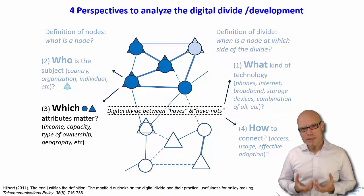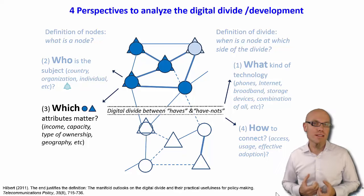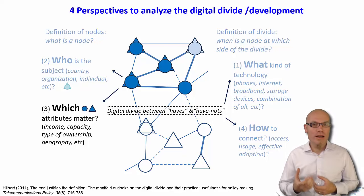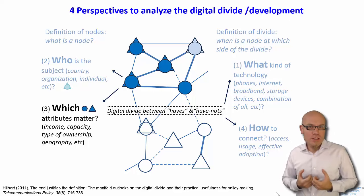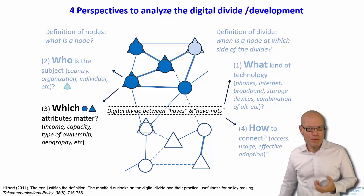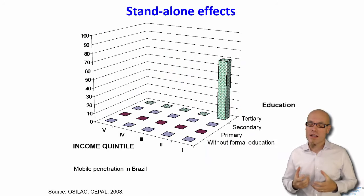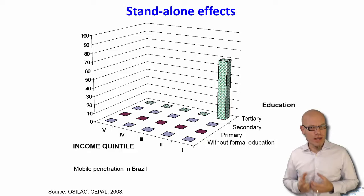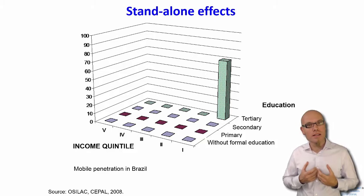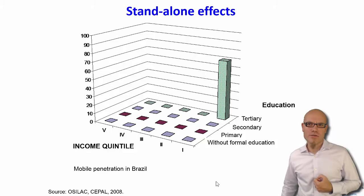After we have chosen our subject of interest, we can ask: what are the attributes or characteristics of these subjects? We try to find characteristics that help us understand why some connect earlier than others and why some have more connectivity. If we choose individuals as our subjects, two of the most important attributes that highly correlate with ICT access and usage are income and education. Both make sense — more income helps to have ICT — and it's interesting that there is a stand-alone effect of education as well.